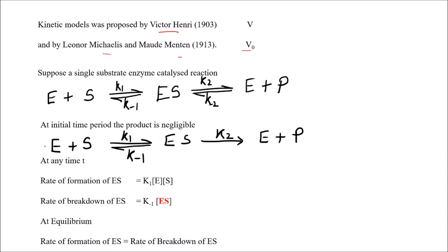In the Michaelis-Menten equation, they considered the rate of formation of ES and the rate of breakdown of ES only up to E+S. Briggs and Haldane introduced one more step: it is not always the case that ES will be at small concentration. There will be a point where ES breaks down into E plus P, though they also ignored the reverse reaction where E plus P recombines to form ES.